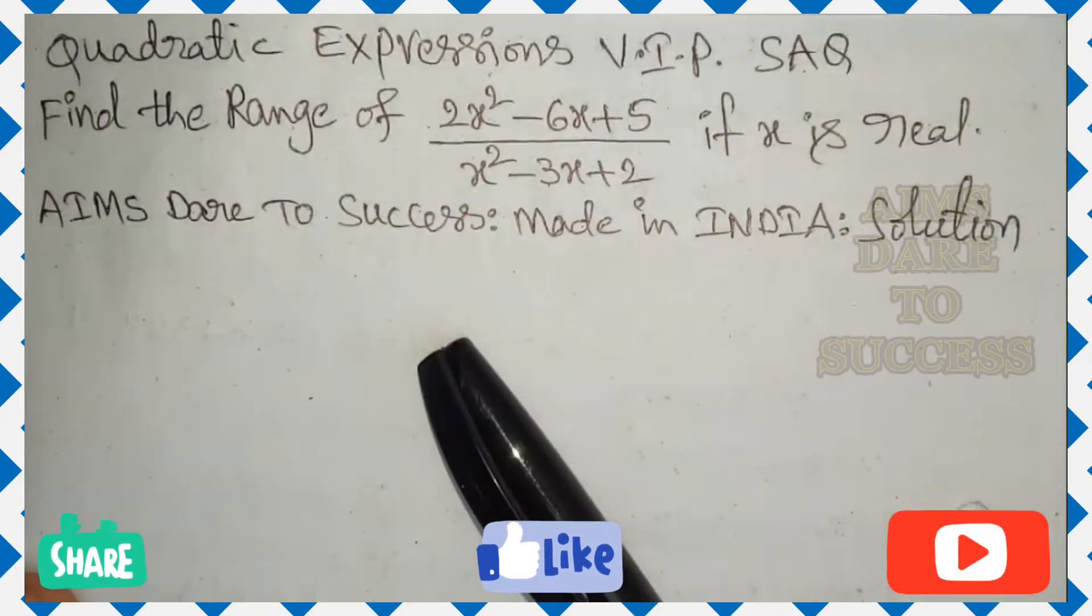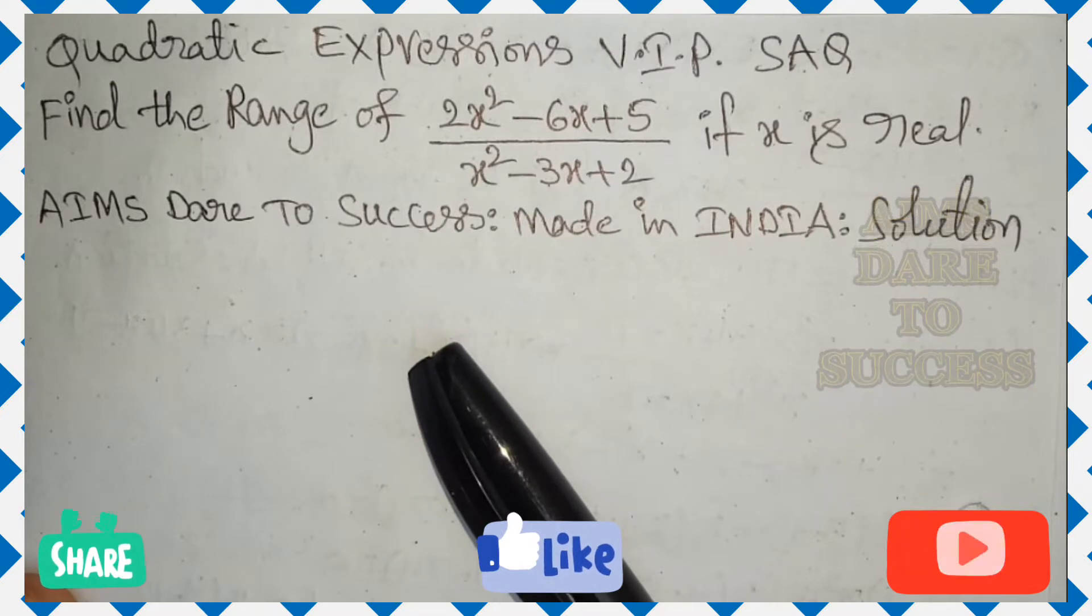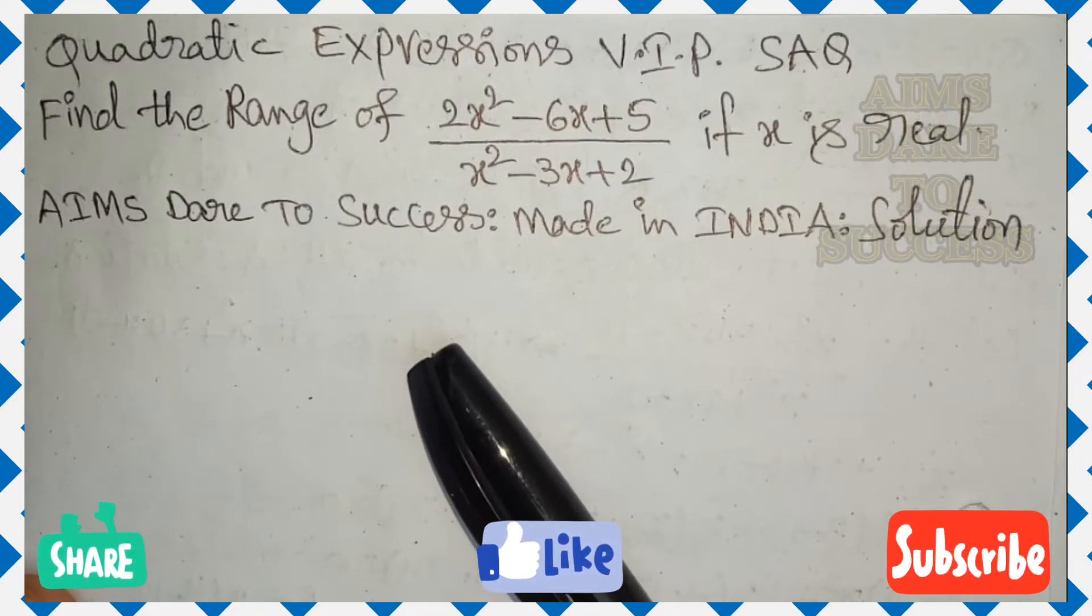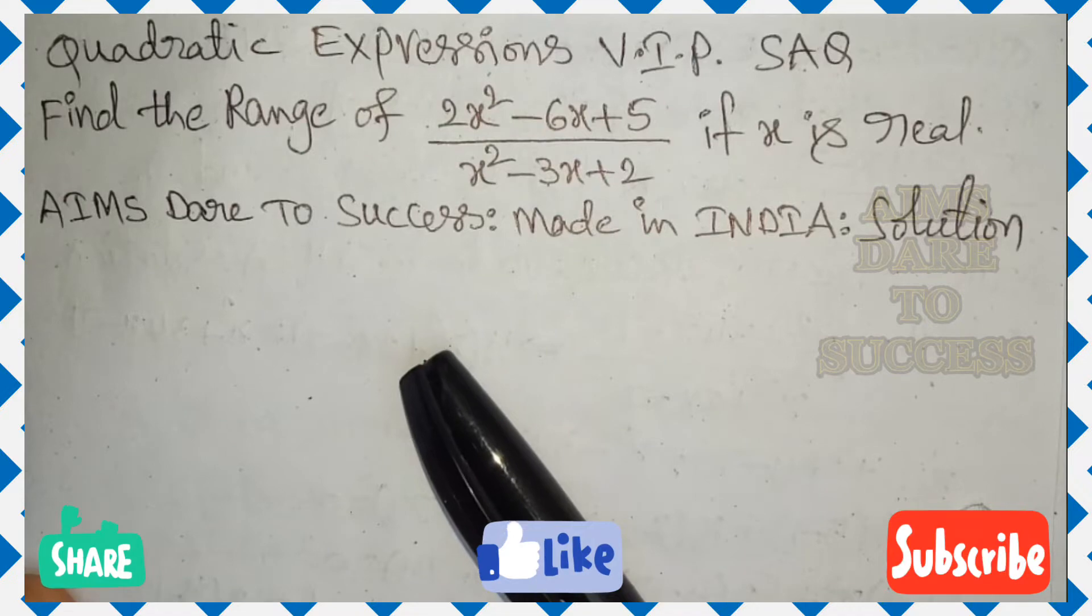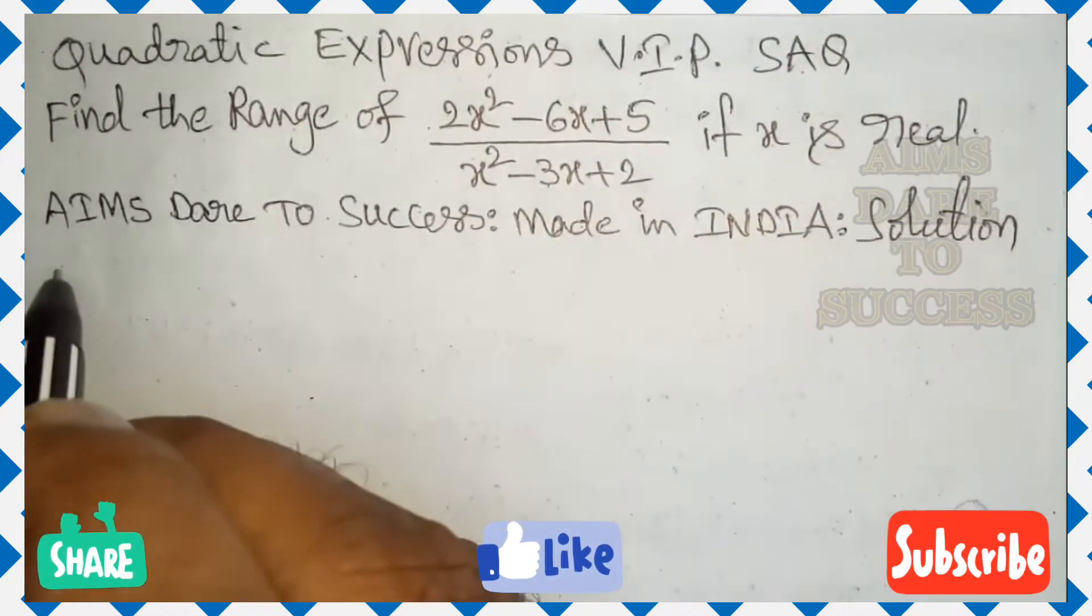Very important previous VIP short answer question. Find the range of 2x square minus 6x plus 5 by x square minus 3x plus 2 if x is real. AIMS Dare to Success Made in India solution.